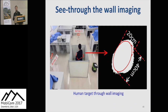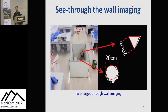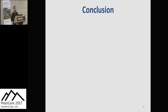TagScan is also able to image a human body accurately when it is behind a wall made of plywood. In a more challenging scenario, TagScan can image two targets accurately at the same time when the two targets are not close to each other. When the two targets are very close, we may consider them as a single big target. For more details, please refer to our paper.